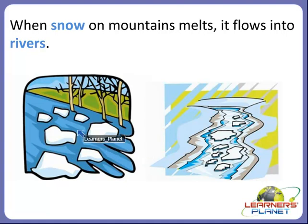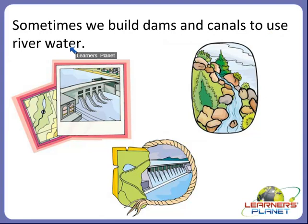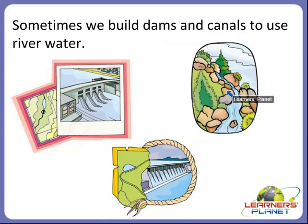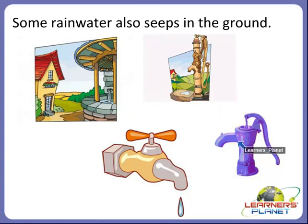We can say that we get water from the snow also. Sometimes we build dams and canals to use river water. Some rain water also seeps into the ground, and we can use this water by digging wells and hand pumps.